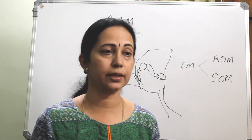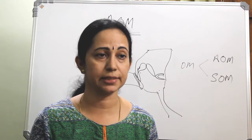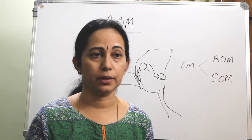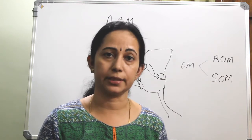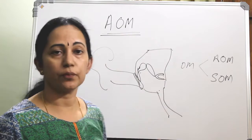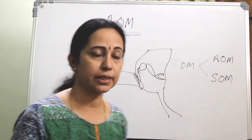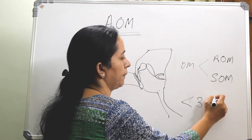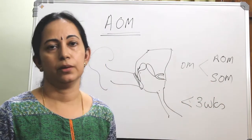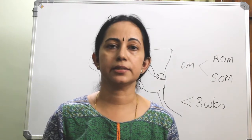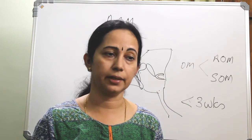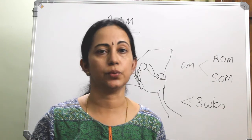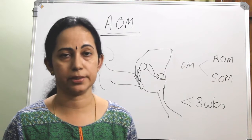Secretory otitis media was already discussed in detail in the class on otitis media with effusion. Acute is when it is less than three weeks duration. So, acute otitis media is a pyogenic infection of the middle ear cleft with less than three weeks duration.